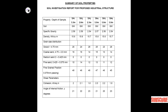Grain size distribution: gravel fraction greater than 4.75 mm — minimum 23%, maximum 28%. Coarse sand (4.75 to 2 mm) — minimum 13%, maximum 16%. Fine sand (0.425 to 0.075 mm) — minimum 11%, maximum 14%. Fine-grained fraction passing 0.075 mm — minimum 45%, maximum 48%.